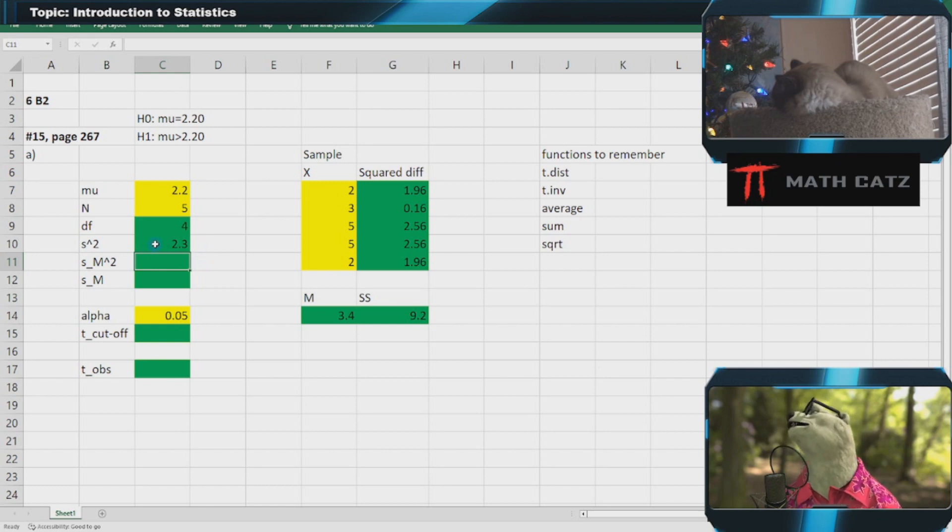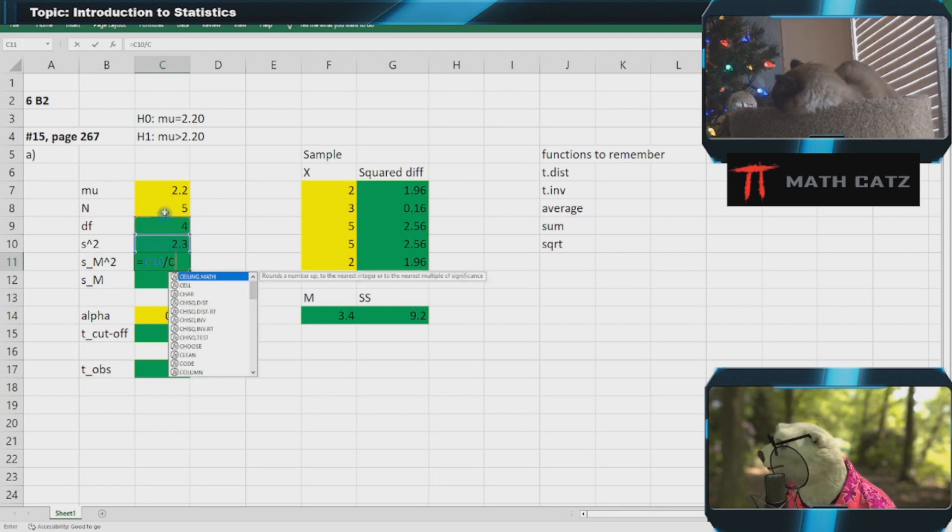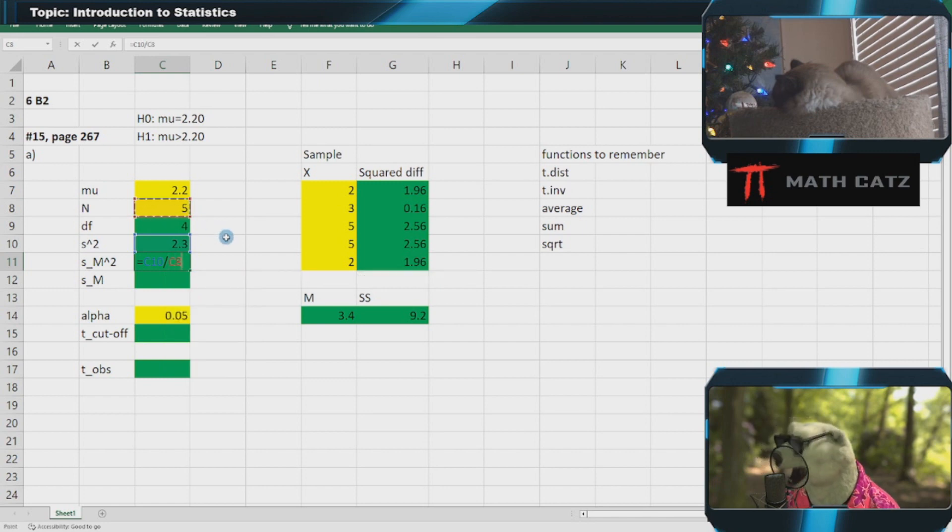The variance of the distribution of means, S²M, is the variance of the distribution of the individuals in the population divided by the sample size n, which is 5 in my sample.